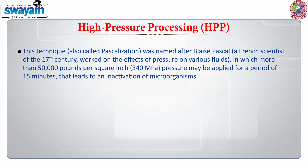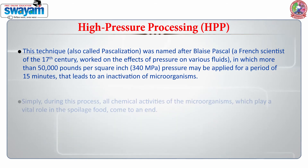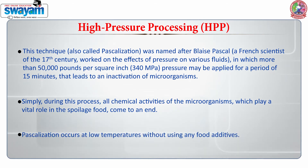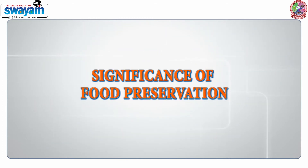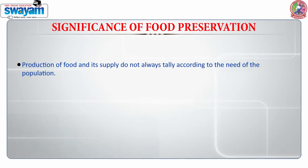High pressure processing is a potentially safe and revolutionary method for preserving and sterilizing food products processed under very high pressure. During this process, certain microorganisms and enzymes in the food get inactivated. This technique is also called pascalization, in which more than 50,000 pounds per square inch of pressure may be applied for a period of 15 minutes, leading to inactivation of microorganisms. All chemical activities of microorganisms that play a vital role in the spoilage of food come to an end. Pascalization occurs at low temperature without using any food additives.